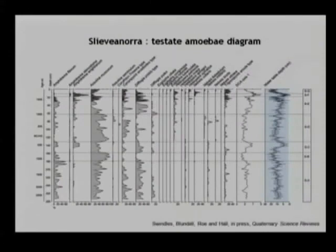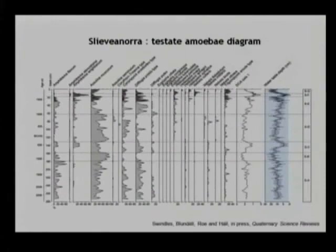This is another diagram from the second bog, the upland-raised bog, and we see a similar pattern of water table variability to that of Dead Island Bog. But we notice that there are changes in peat accumulation rate — at upland sites, the peat grows a little more slowly. So we always have to be aware of these things when comparing regional records.